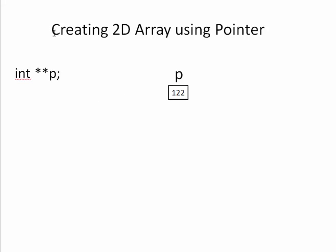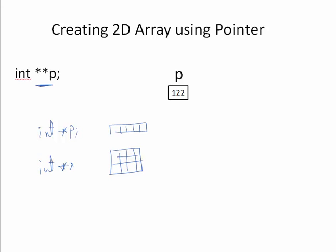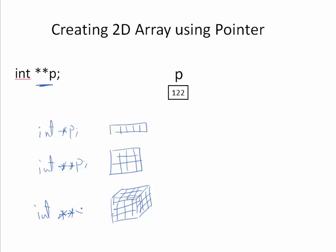Next we will see a pointer to a two-dimensional array. For a single-dimensional array we require a single pointer. For a two-dimensional array we require a double pointer. To access a three-dimensional array we require a triple pointer. So it means: as many dimensions there are, that many levels of pointers are required.